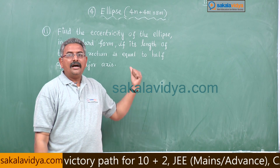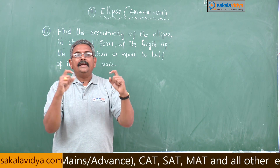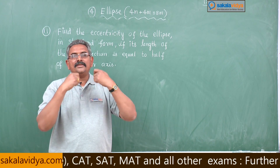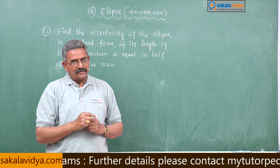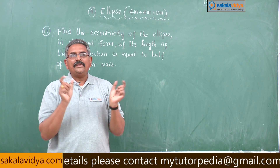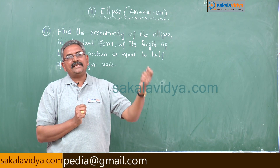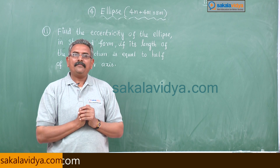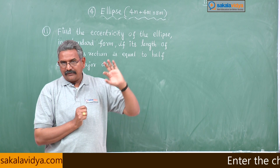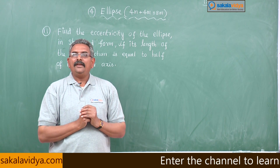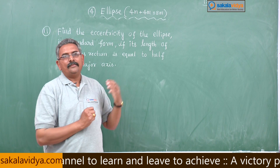Here, half of the length of the major axis is a. So we relate: length of latus rectum equals half of major axis, giving 2b²/a = (1/2)·2a. This gives us a relation between a and b. To find eccentricity, we use the formula b² = a²(1 - e²), which will determine the value of e.